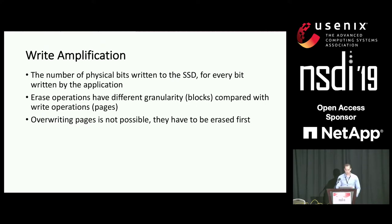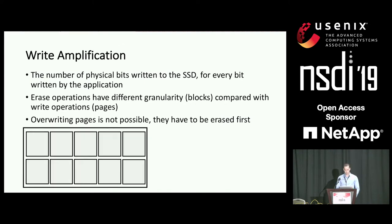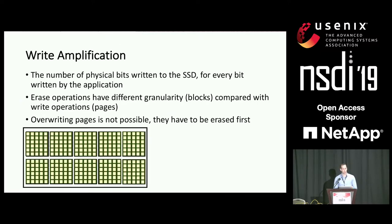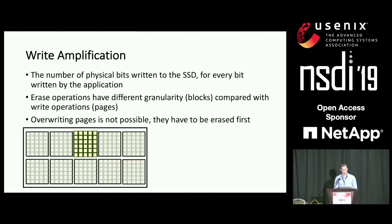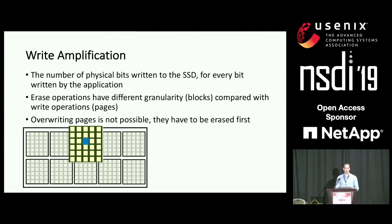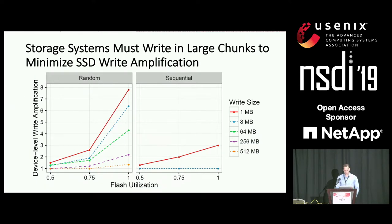So why do we have write amplification in Flash? Unfortunately, writes and deletes in Flash are not symmetric. Imagine the Flash with blocks — the smallest unit that can be erased — consisting of pages, the smallest unit that can be written. To update a page, we can't just overwrite it. Instead, we must copy all pages to another place, delete the entire block, and then rewrite all pages including the updated one. We ran an experiment on an SSD with write counters and the key takeaway is that to reduce write amplification, we must write in large segments on the order of megabytes.